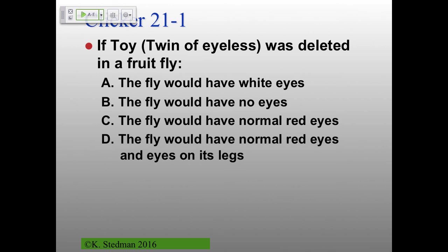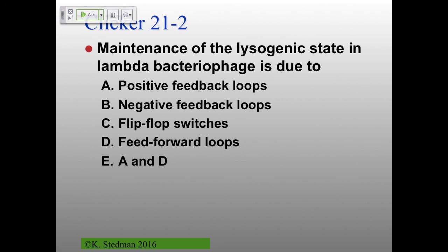In the case of eyeless, the mutation in eyeless results in lacking eyes. The flip side is if you express eyeless ectopically — which is what we talked about last time — you can end up expressing eyes in the wrong place.